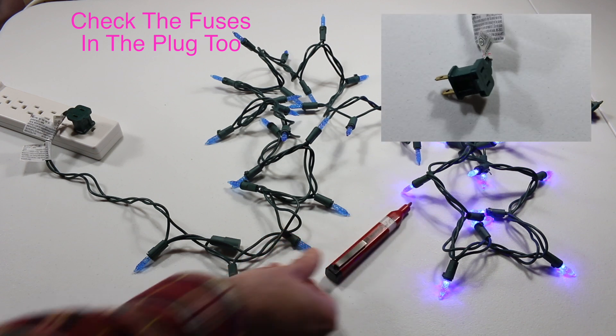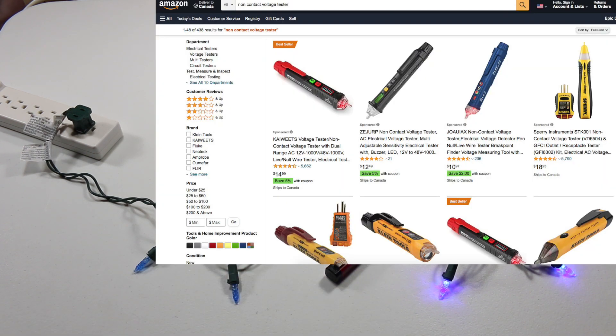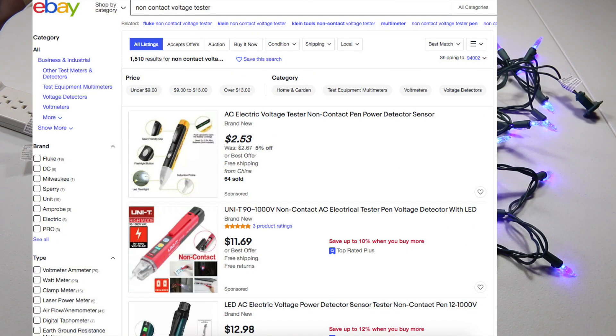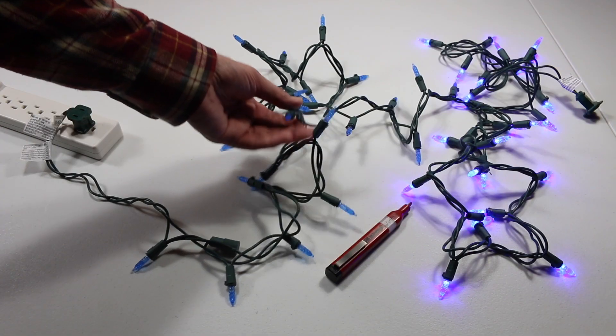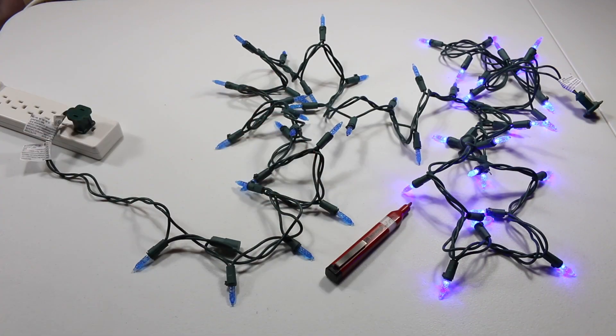These testers can be found on Amazon or big box stores. You might find them for $5 to $20, and you can probably get them even cheaper on eBay or AliExpress. After you've fixed a few sets of lights, it pays for itself.